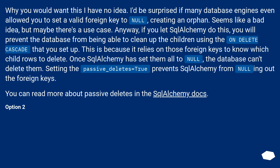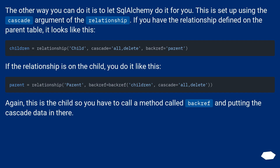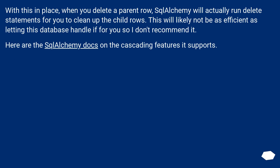The other way you can do it is to let SQLAlchemy handle it for you. This is set up using the cascade argument of the relationship. If you have the relationship defined on the parent table, it looks like this. If the relationship is on the child, you do it like this — on the child you have to call the backref method and put the cascade data in there. With this in place, when you delete a parent row, SQLAlchemy will actually run delete statements to clean up the child rows. This will likely not be as efficient as letting the database handle it, so I don't recommend it. Here are the SQLAlchemy docs on the cascading features it supports.